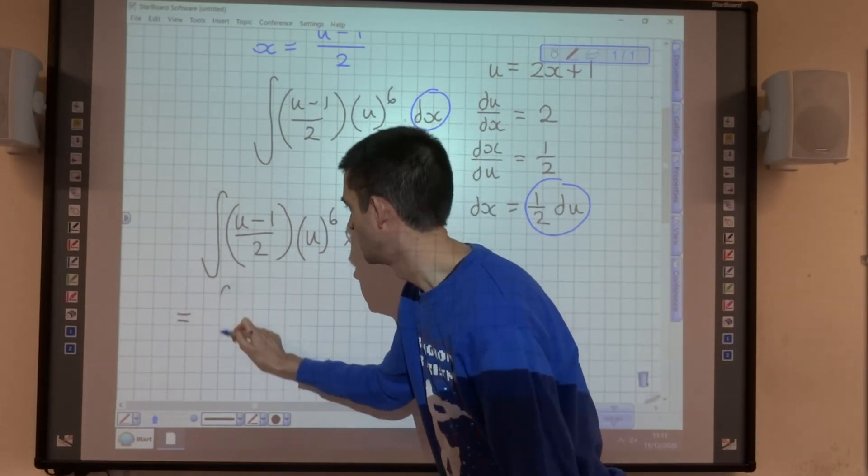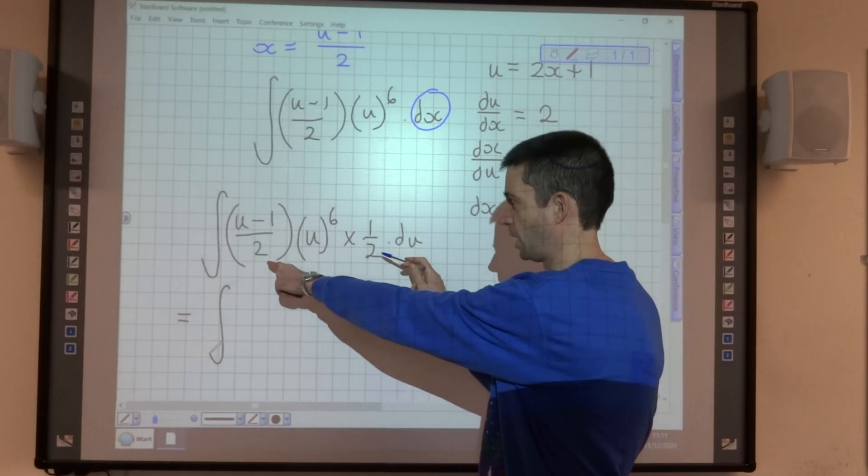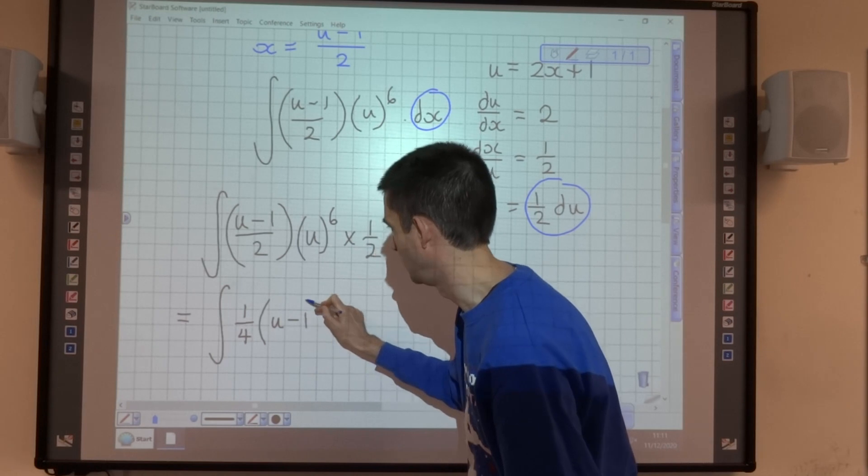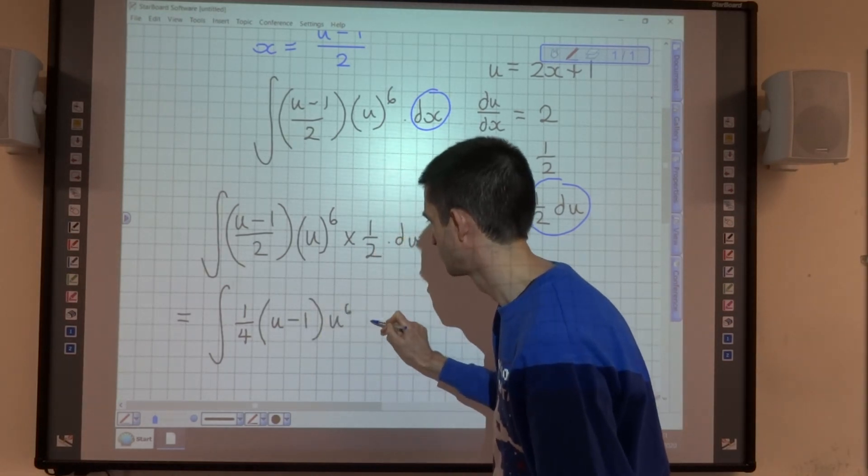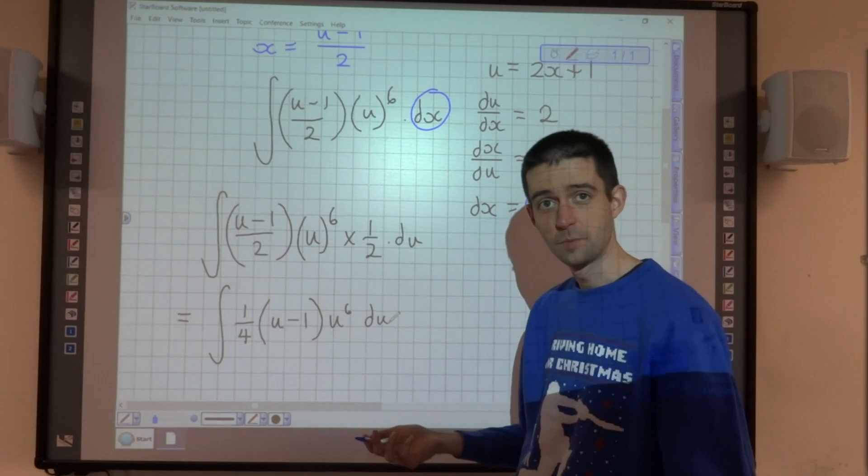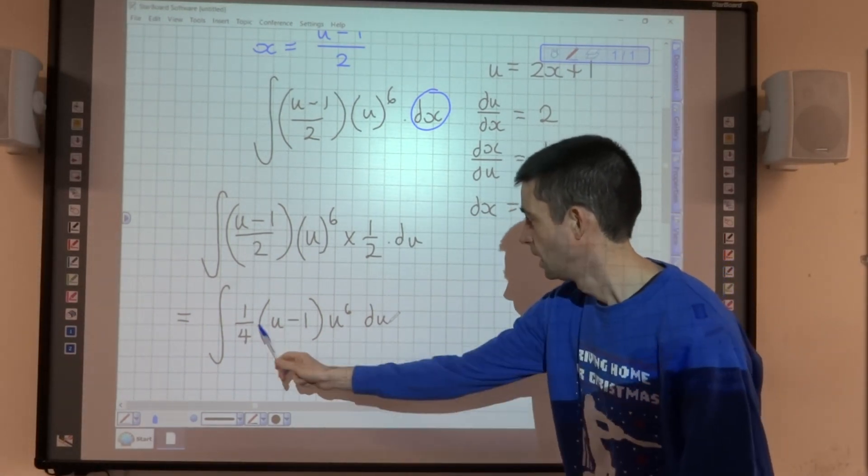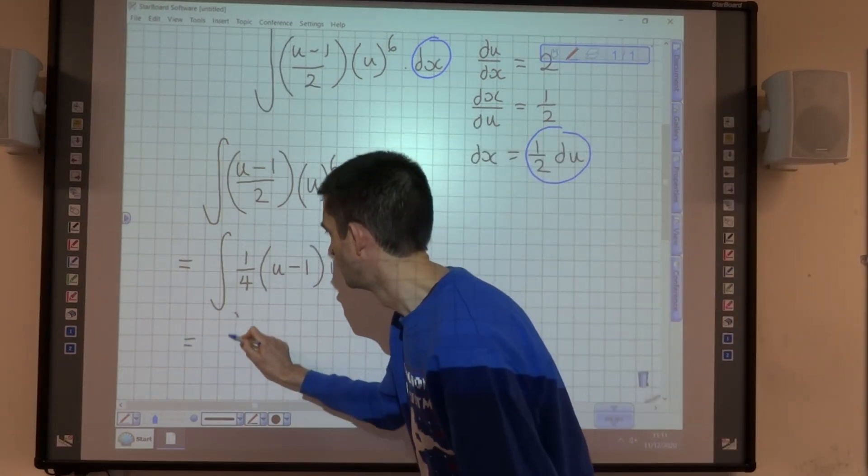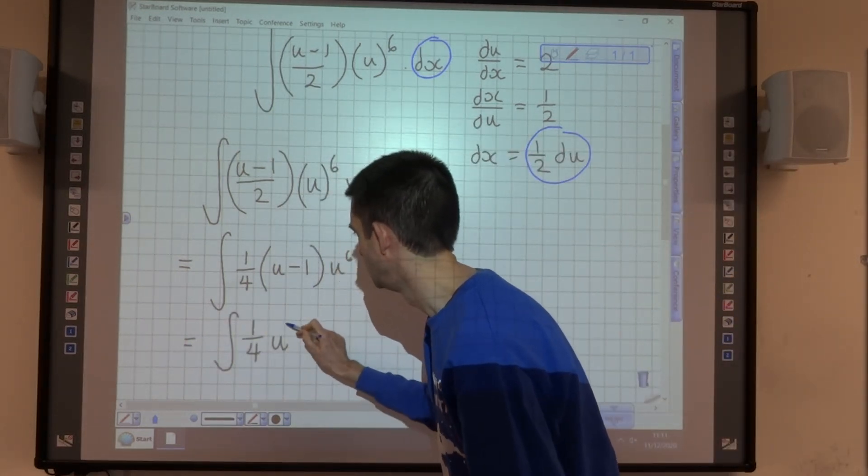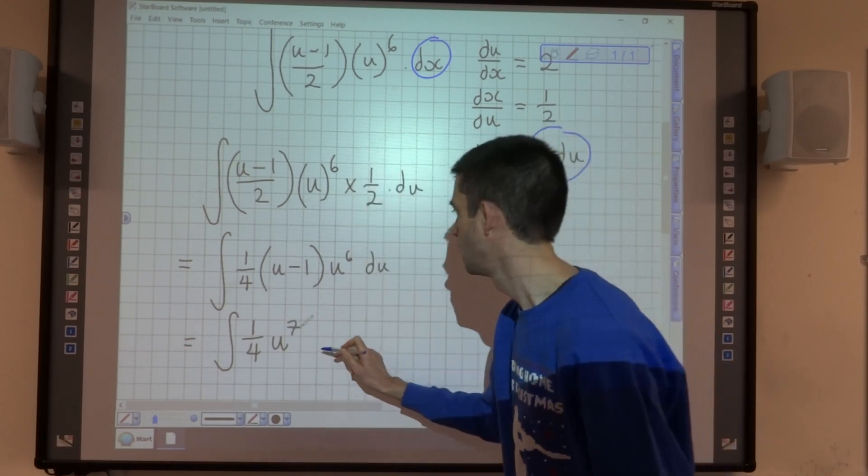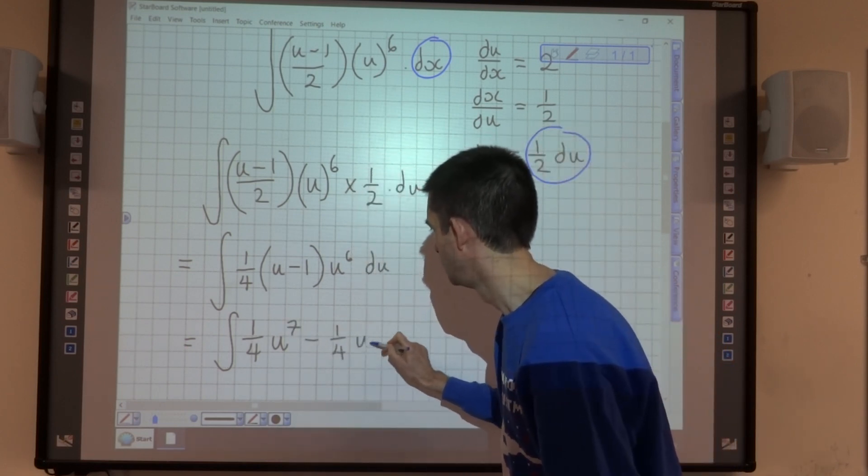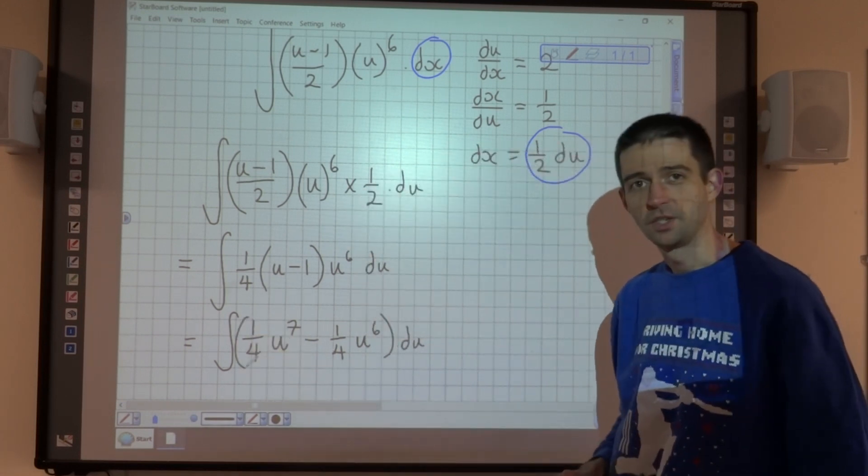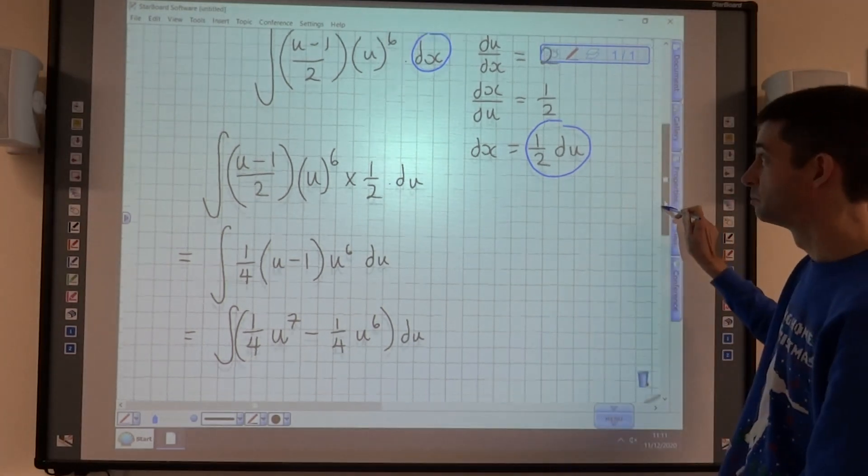So let's just tidy this up a little bit. So I've got 1/2 times 1/2 here, which is going to be 1/4. That would make my bracket u minus 1, times u to the power of 6 with respect to u. So if I expand all this out, taking care, it's going to be 1/4 u to the power of 7 minus 1/4 u to the power of 6. I'm going to put that in a bracket now with respect to u. And this is just polynomial integration.